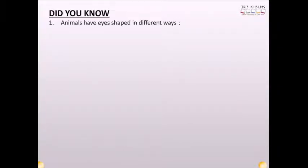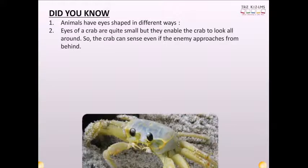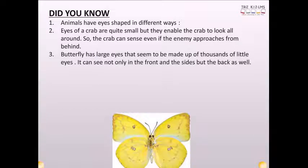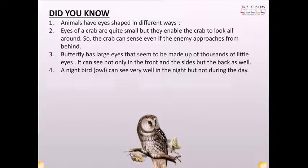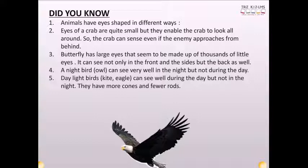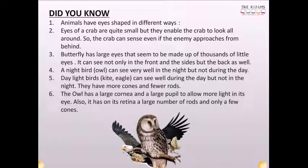Did you know? Animals have eyes shaped in different ways. Eyes of a crab are quite small but they enable the crab to look around, so the crab can sense even if the enemy approaches from behind. Butterfly has large eyes that seem to be made of thousands of little eyes. It can see not only in the front and the sides but the back as well. A night bird or an owl can see very well in the night but not during the day. Daylight birds, like kite or eagle, can see very well during the day but not in the night. They have more cones and fewer rods. The owl has a large cornea and a large pupil to allow more light in its eye. Also, it has on its retina a large number of rods and only a few cones.